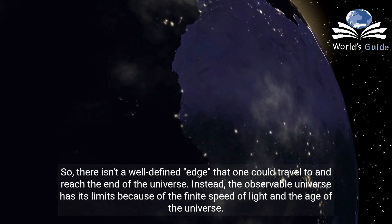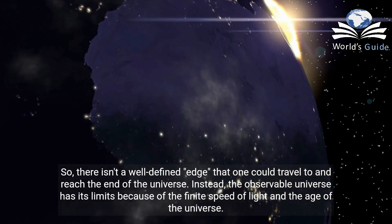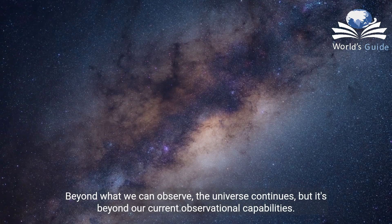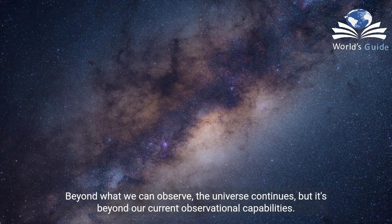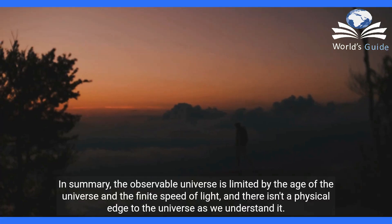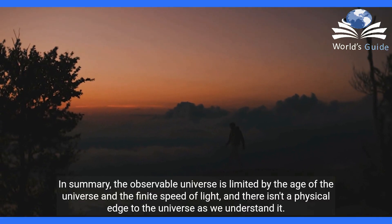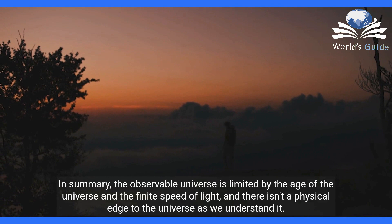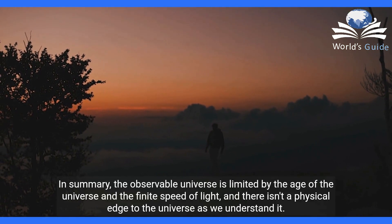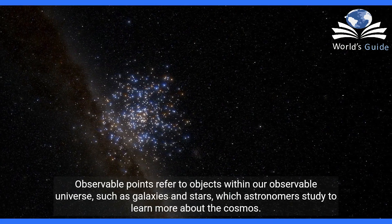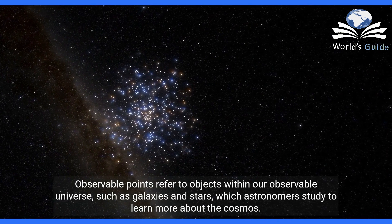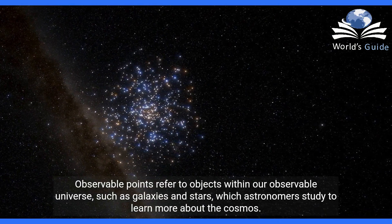Instead, the observable universe has its limits because of the finite speed of light and the age of the universe. Beyond what we can observe, the universe continues, but it's beyond our current observational capabilities. In summary, the observable universe is limited by the age of the universe and the finite speed of light, and there isn't a physical edge to the universe as we understand it. Observable points refer to objects within our observable universe — such as galaxies and stars — which astronomers study to learn more about the cosmos.